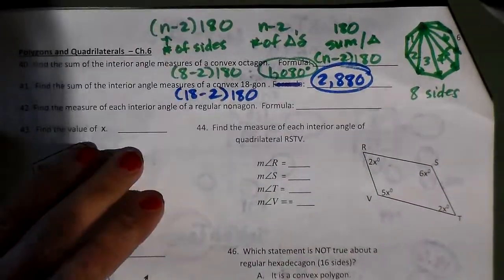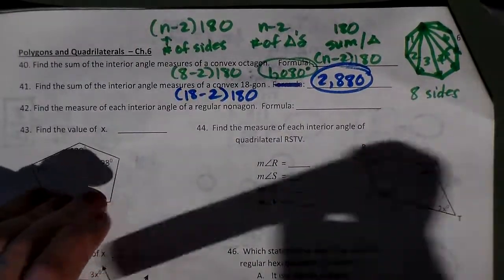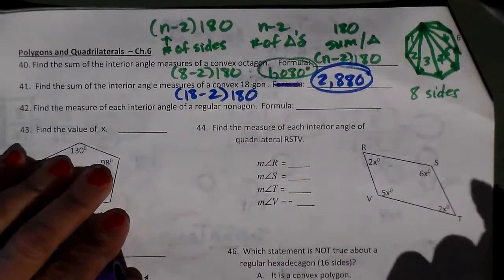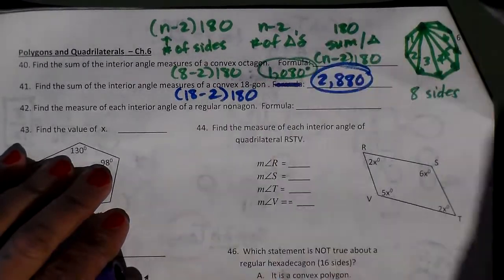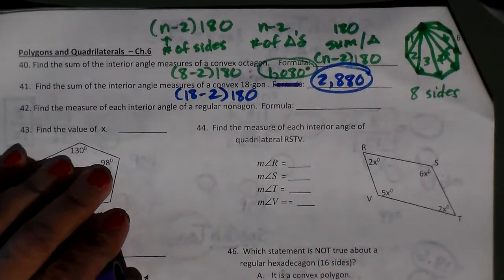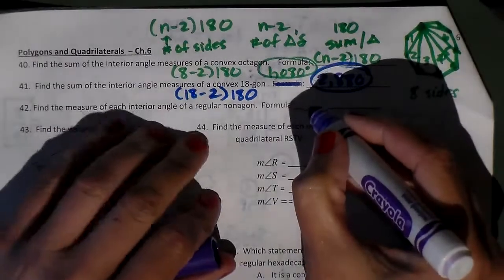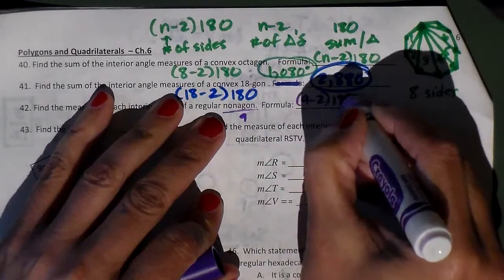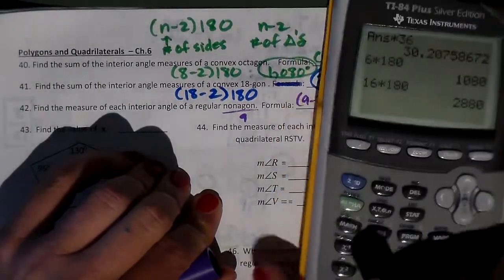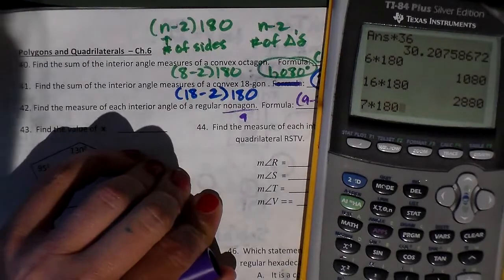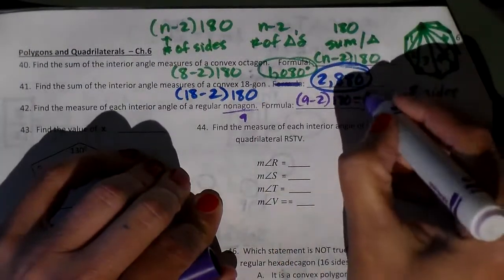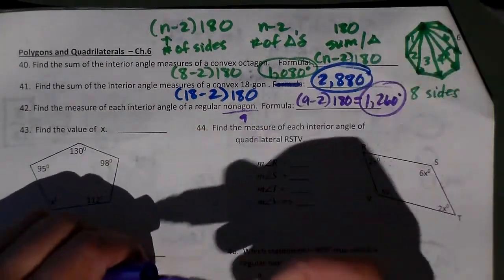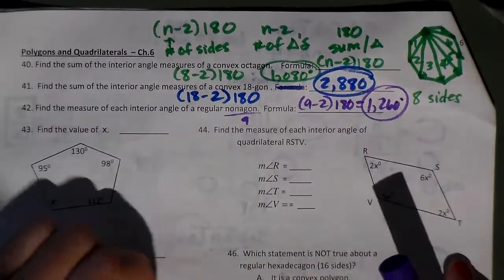And let's do the last one. We have a regular nonagon. It's saying regular because regular means all sides are congruent and all angles are congruent, but n minus 2 times 180 works for any polygon. Nonagon is 9 sides. So we have 9 minus 2 times 180, which is 7 times 180, which is 1,260. That's how you do your generic angle sums.